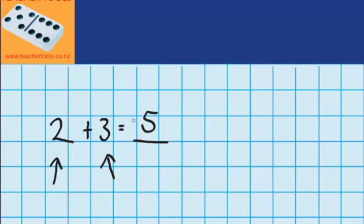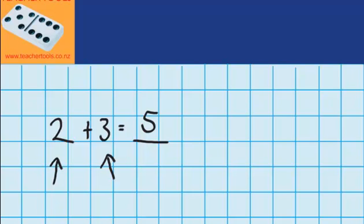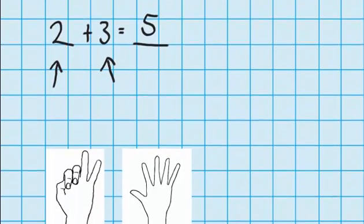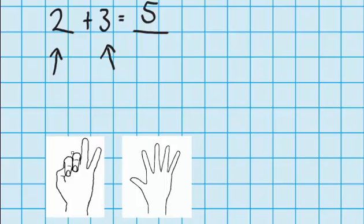If you got a bit stuck with that one, I'll just show you what it looked like with fingers. So first of all, I stretched out two fingers. And then the question says I had to stretch out three more. So there were my first two, and there's one, two, three more fingers. So that's how I worked out that the answer is five.